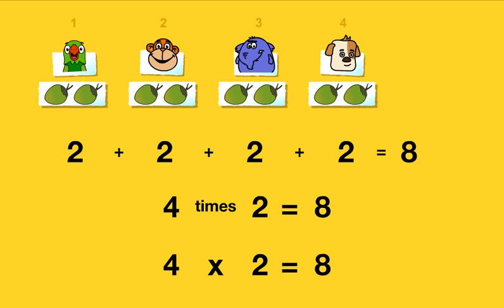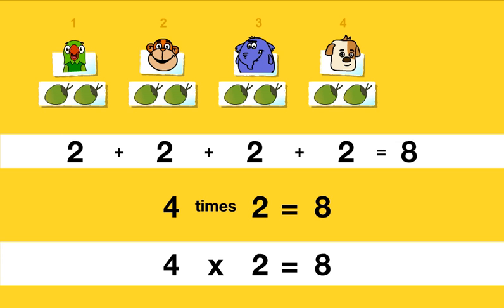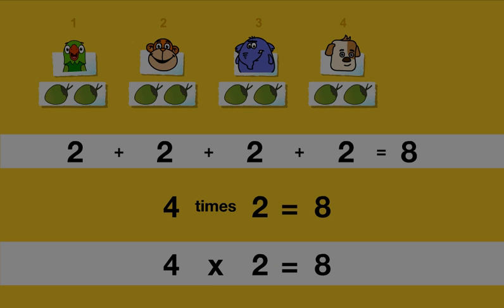And so, we see that two plus two plus two plus two is the same as four times two. There is another way to calculate four times two. Shall we look at it?